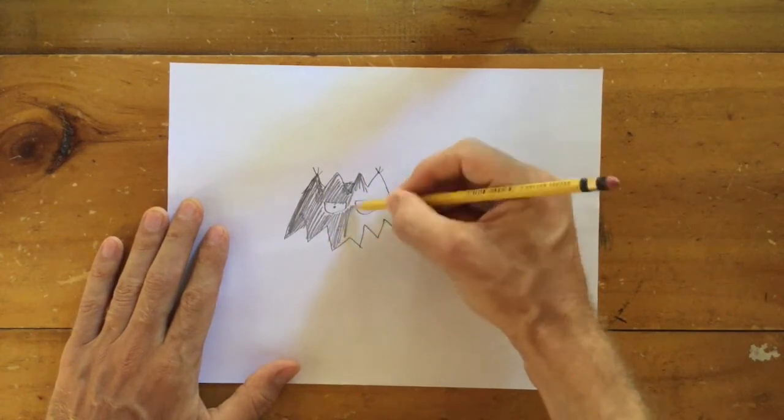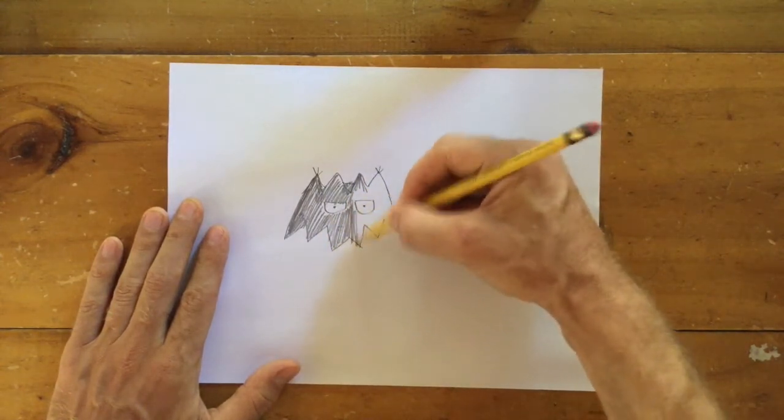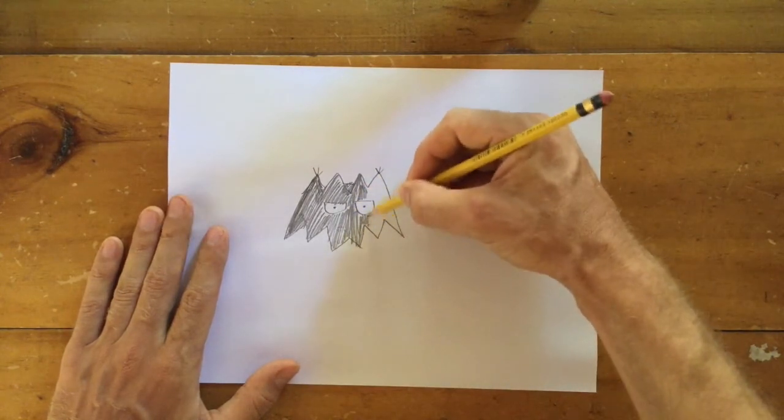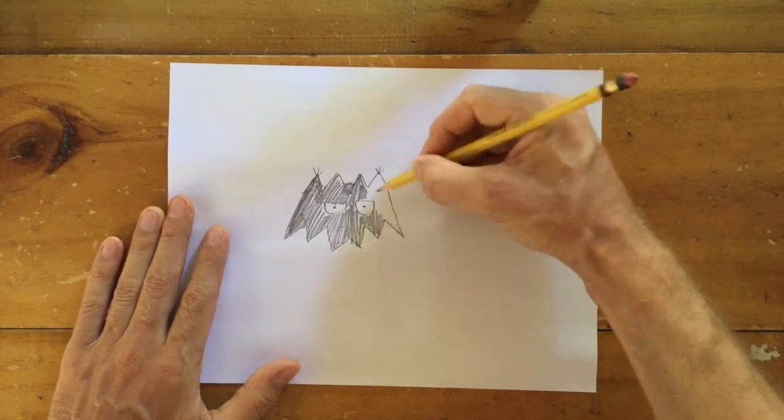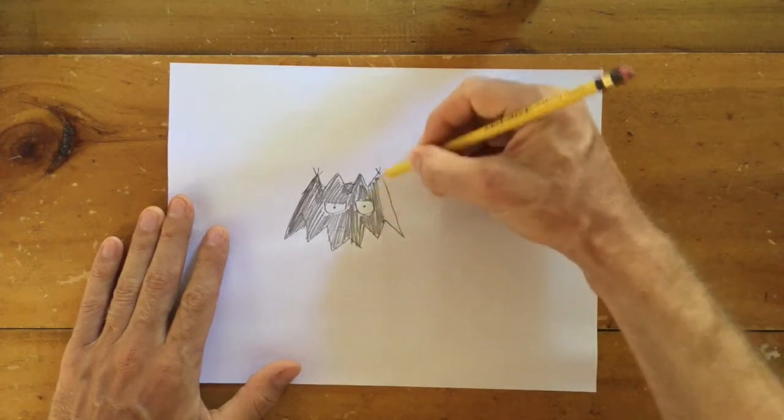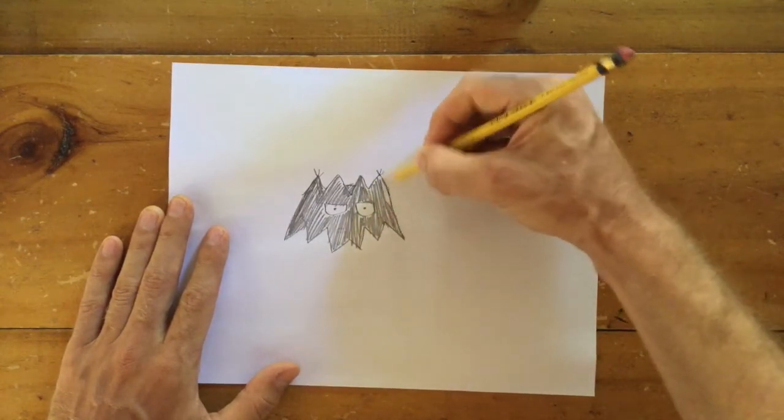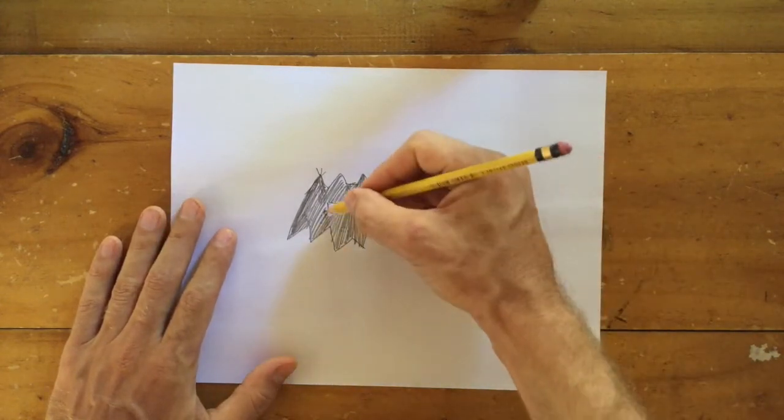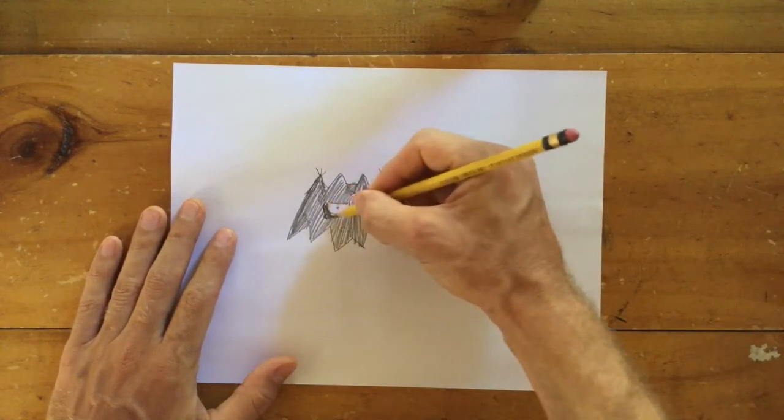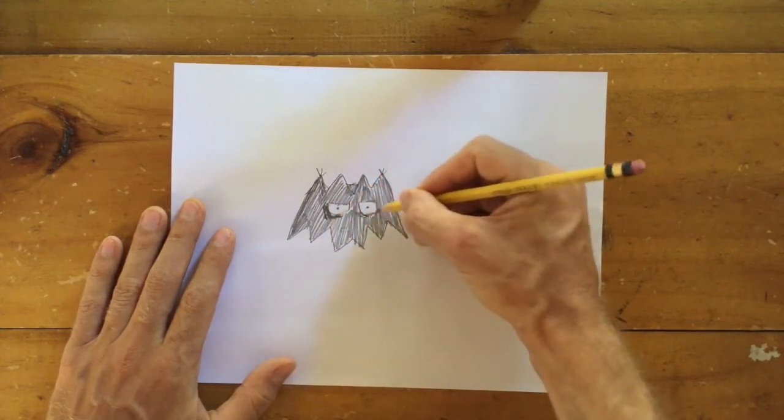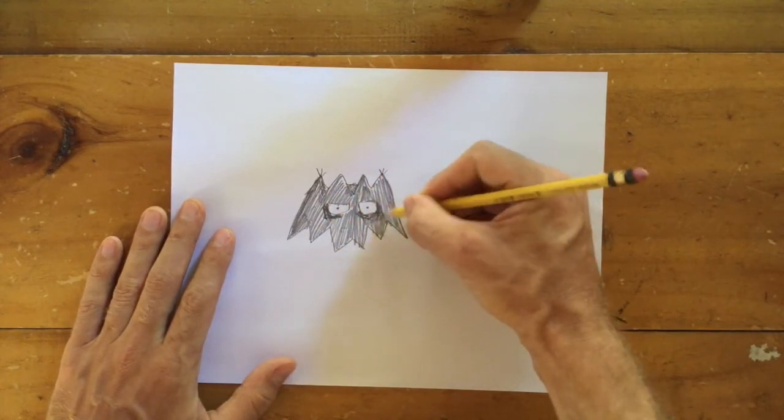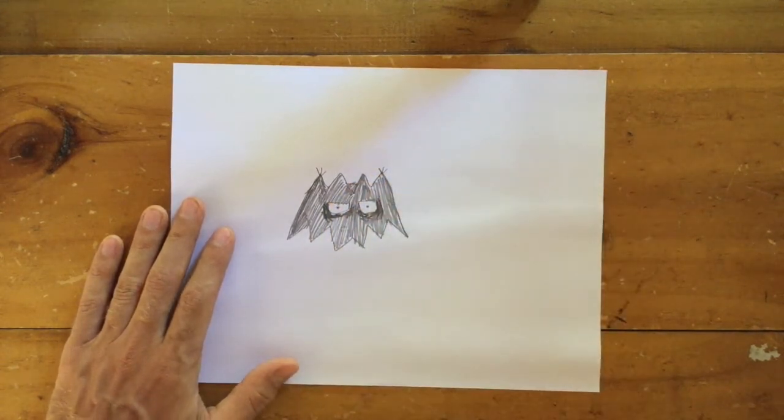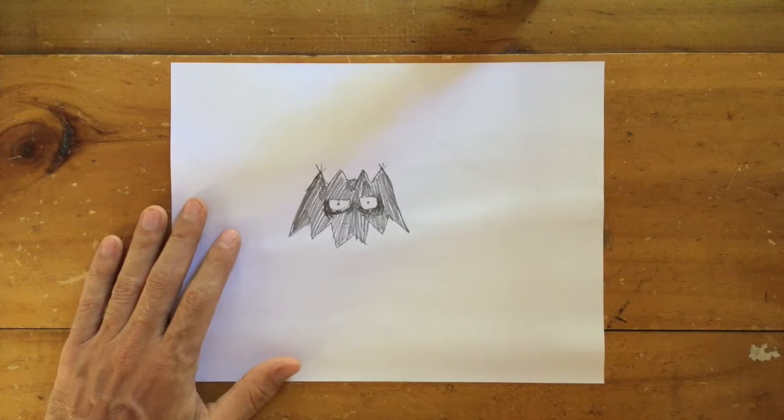Now here you can change the direction of your shading with the angle of the body. There we have it. It's a spooky bat. Looks quite good if you add some extra shading under the eyes, this one. A spooky haunted house bat.